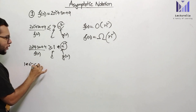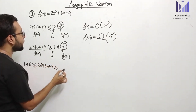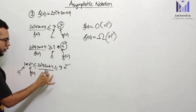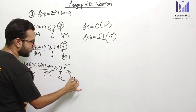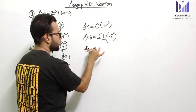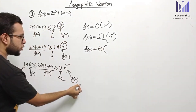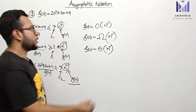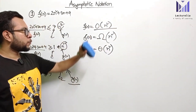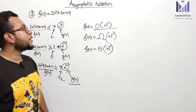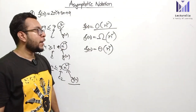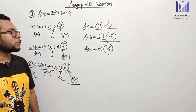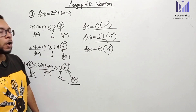For Theta notation: 1 into n² is less than or equal to n² + 3n + 4 is less than or equal to 9n². So c1 into g(n) ≤ f(n) ≤ c2 into g(n). Therefore the function f(n) equals Theta of g(n), where g(n) is n². Both the upper bound (Big O of n²) and lower bound (Big Omega of n²) are represented.